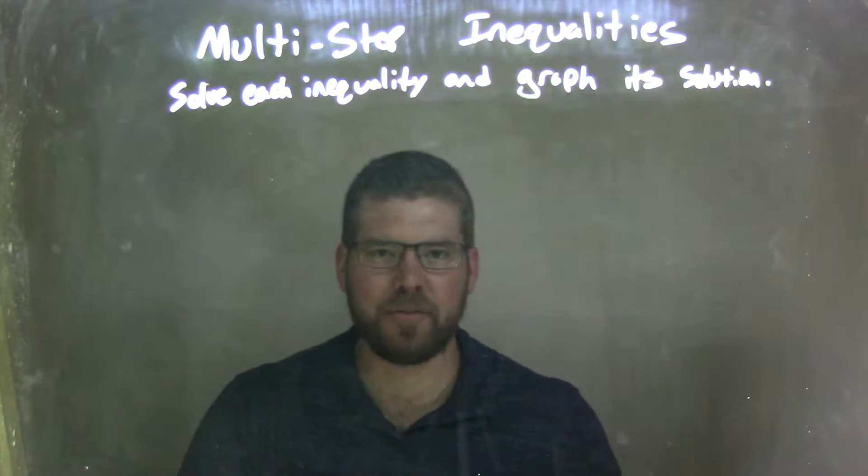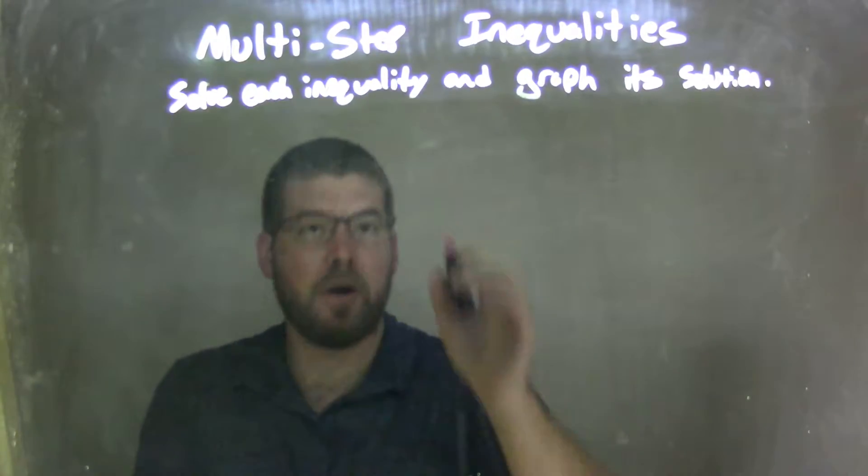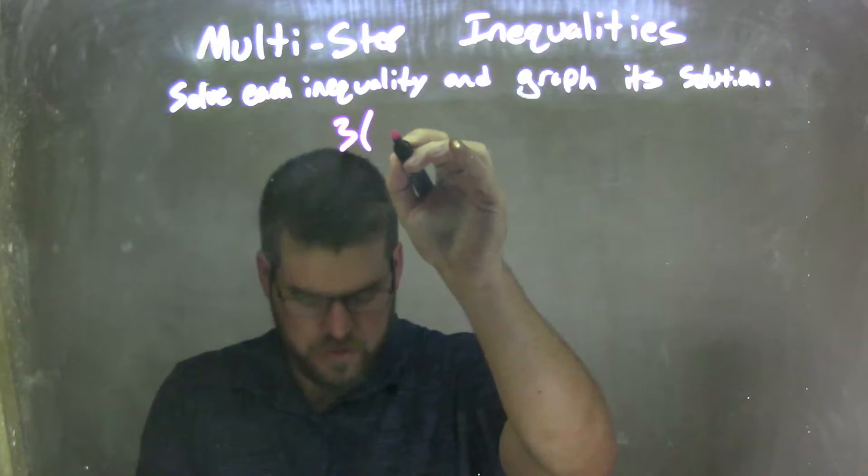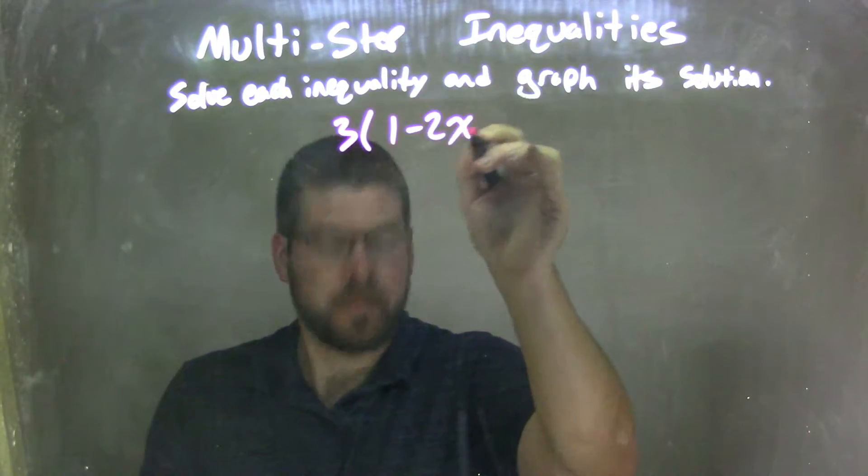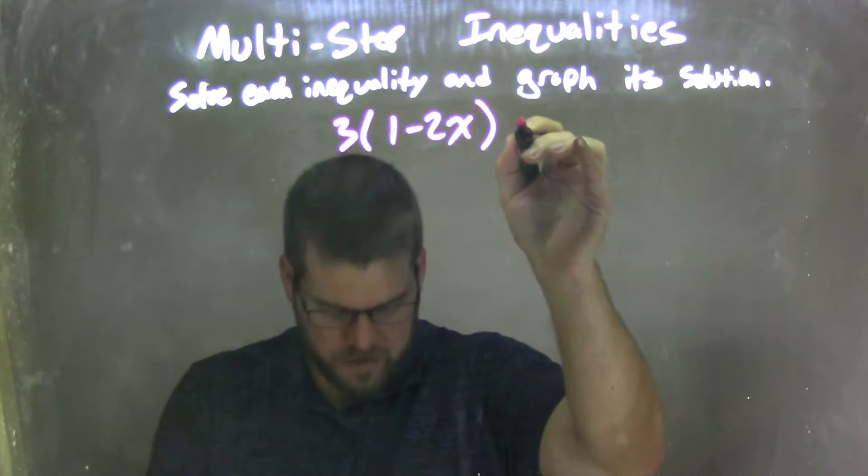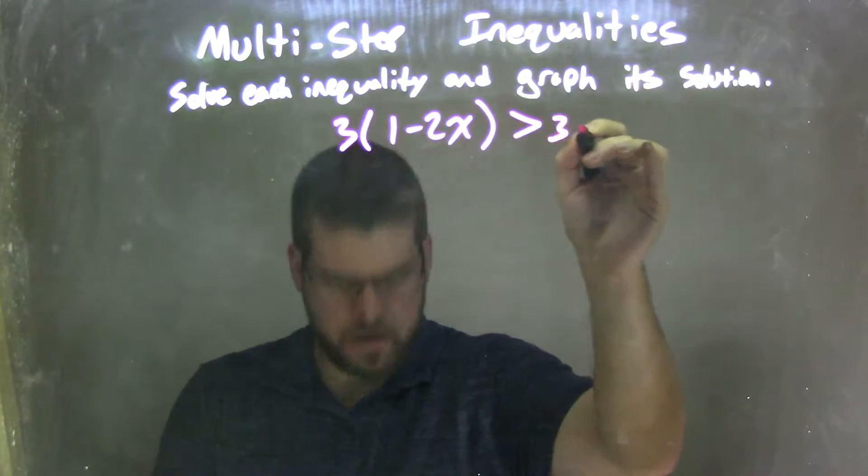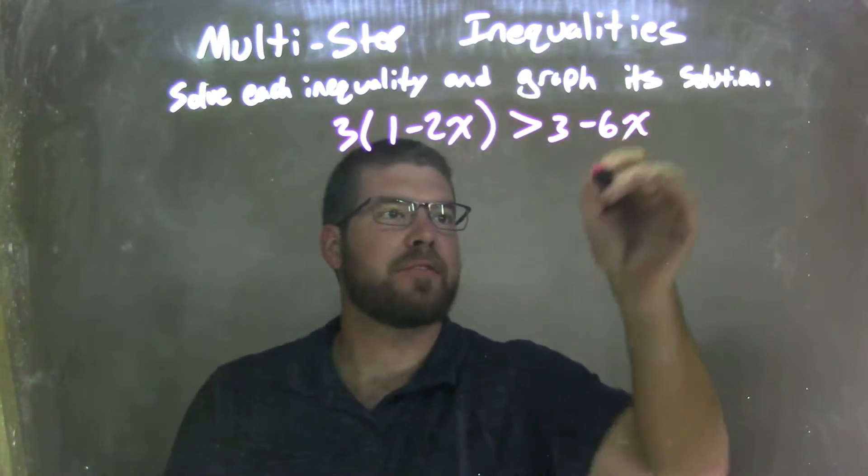And we're going to solve each inequality and graph its solution. So if I was given this inequality, 3 times 1 minus 2x is greater than 3 minus 6x.